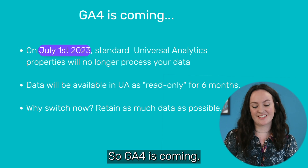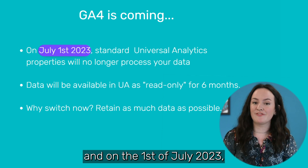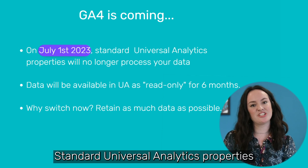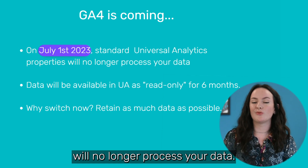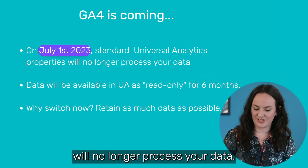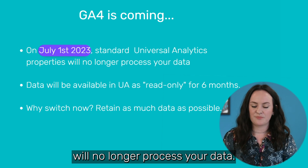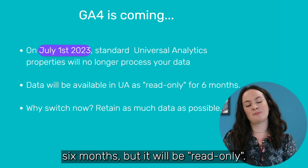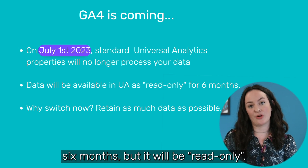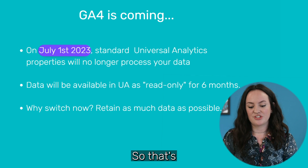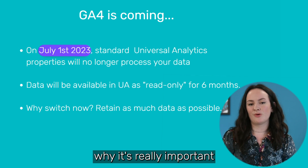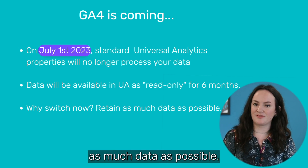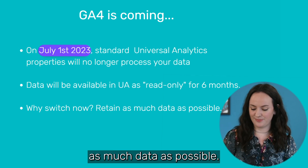So GA4 is coming, and on the 1st of July 2023, standard Universal Analytics properties will no longer process your data. Data will be available on there for six months, but it will be read-only. So that's why it's really important to try and switch over to GA4 now to try and retain as much data as possible.